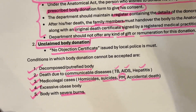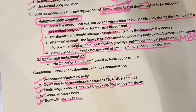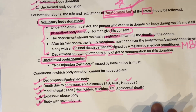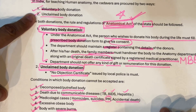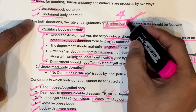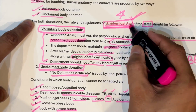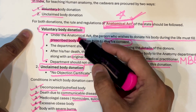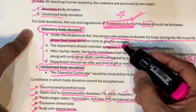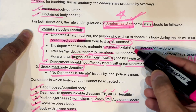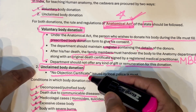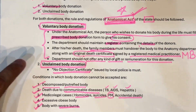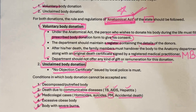To revise: first, write about the two types — voluntary donation and unclaimed body donation — and note that both come under the Anatomical Act, which is present in every state. Then write the three things about voluntary body donation: there is a prescribed form, there is a register in the department, and there is a need for an original death certificate. For unclaimed bodies, a no objection certificate is needed. Finally, include the conditions where body donation is not accepted. This is how to write a short note on body donation.